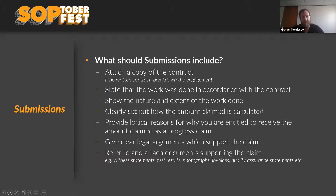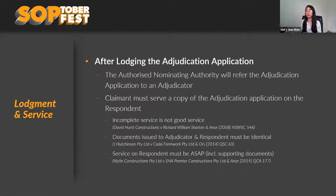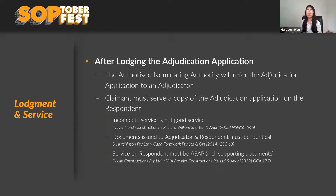Moving on to lodgement and service. If you lodge an adjudication application, it goes to an authorized nominating authority — we use Adjudicate Today. They refer the application to an adjudicator, and the claimant must serve a copy of the application on the respondent. With Adjudicate Today there is a lockbox system — you upload it online. Importantly, always look at your contract, as it will stipulate who actually receives service.